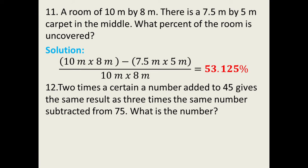Let's do the representation. It's up to you what variable you're going to use. I will represent x here as the number. So this is 2 times a certain number, so that is 2x, added to, so that is plus. Added to 45 gives the same result as three times, so it gives the same result as equal. So here it is, 2x plus 45 equals to...